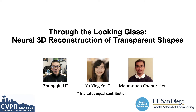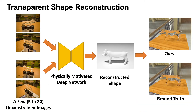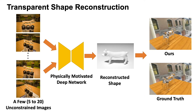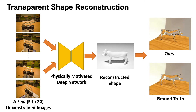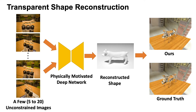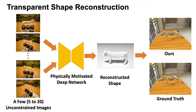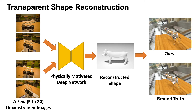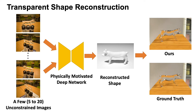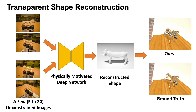We present our work on deep learning based 3D reconstruction of transparent objects. We propose a physically motivated deep network to reconstruct transparent shapes from a few unconstrained images. Our method yields high quality 3D reconstructions that closely match scanned ground truth.